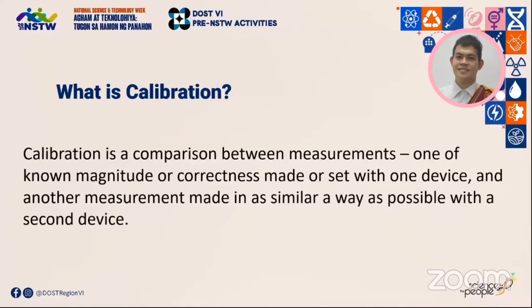Calibration can be briefly described as an activity where the instrument being tested is compared to a known reference value. At the simplest level, calibration is a comparison between measurements — one of known magnitude or correctness made with one device, and another measurement made in as similar a way as possible with a second device. The device with known or assigned correctness is called the standard, while the second device is the unit under test or test instrument.